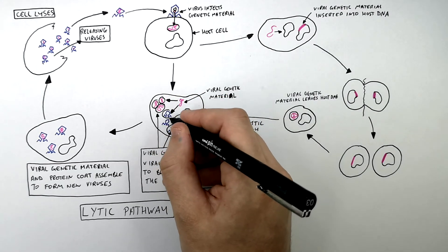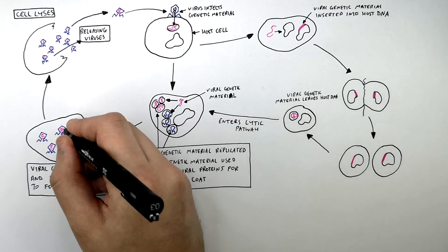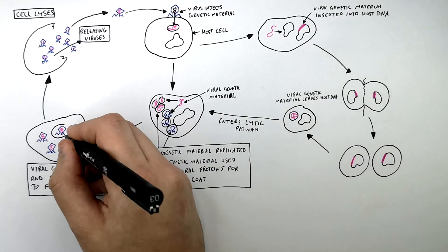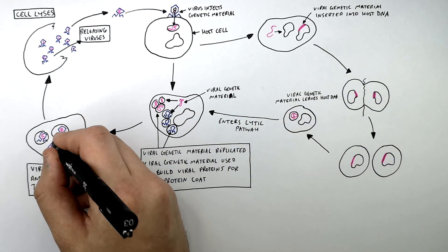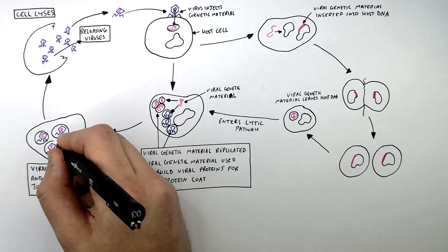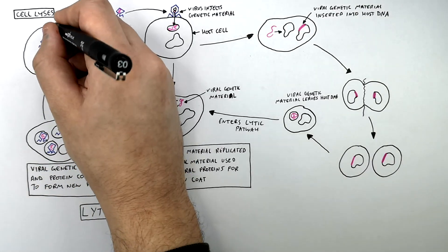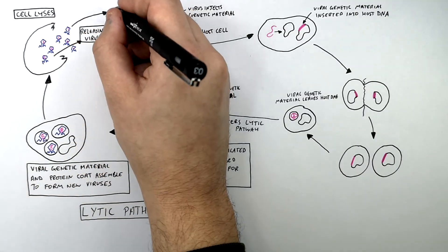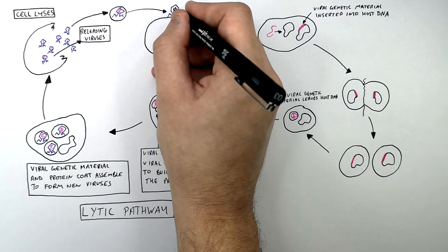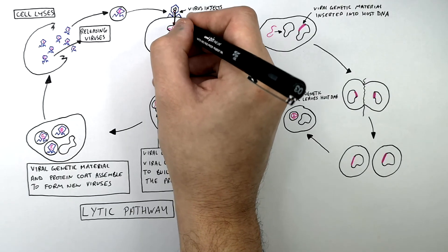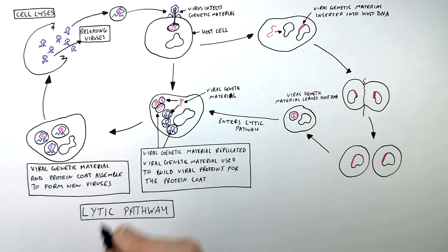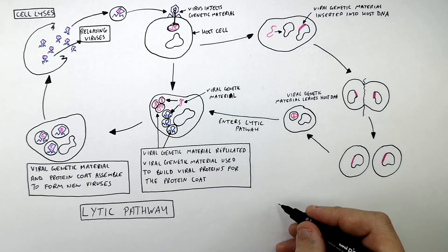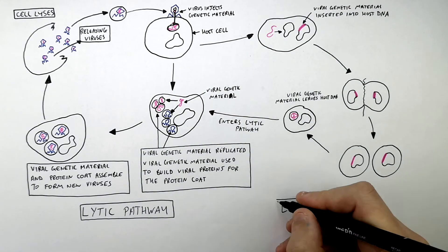The newly freed viral genetic material can replicate and form new viral proteins. These viral proteins and genetic material combine to form new viruses. The cell then undergoes cell lysis, releasing viruses that go on to infect other cells in the lytic pathway. This overall process described previously was the lysogenic pathway.